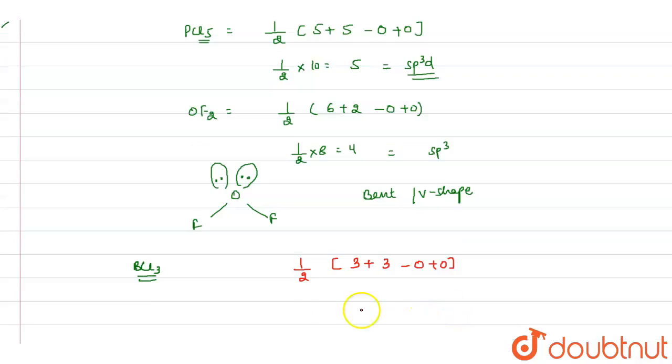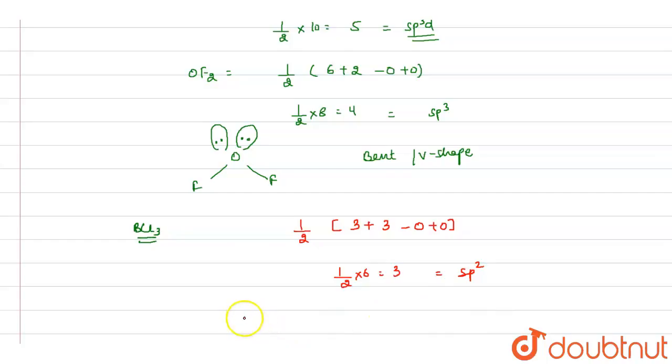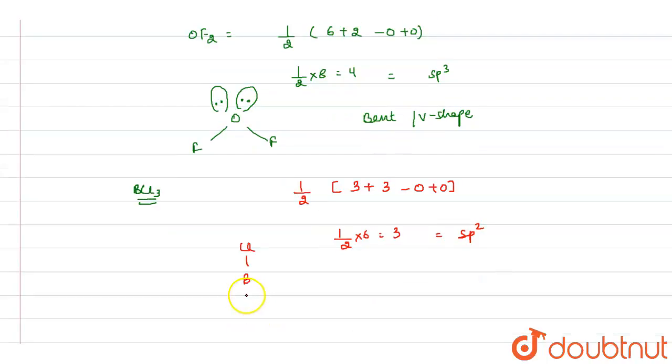There is no cation and no anion. So according to that, it will be 3, that means its hybridization will be sp2. And its shape, when we draw its shape, it is BCL.